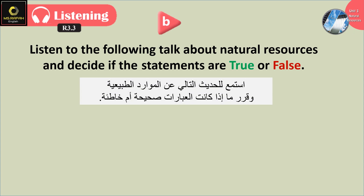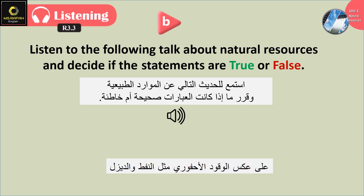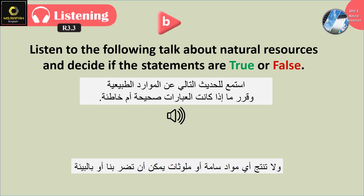Now question B. Listen to the following talk about natural resources and decide if the statements are true or false. Unlike fossil fuels such as oil and diesel, renewable energy sources produce no greenhouse gases and do not produce any toxic substance or pollutants that could harm us or the environment.